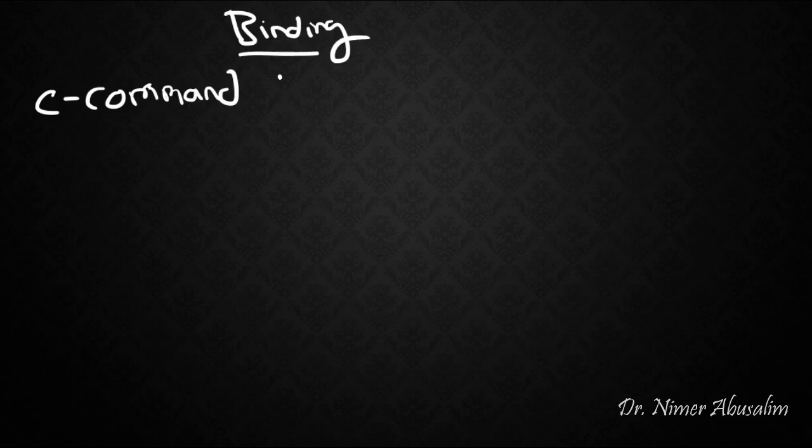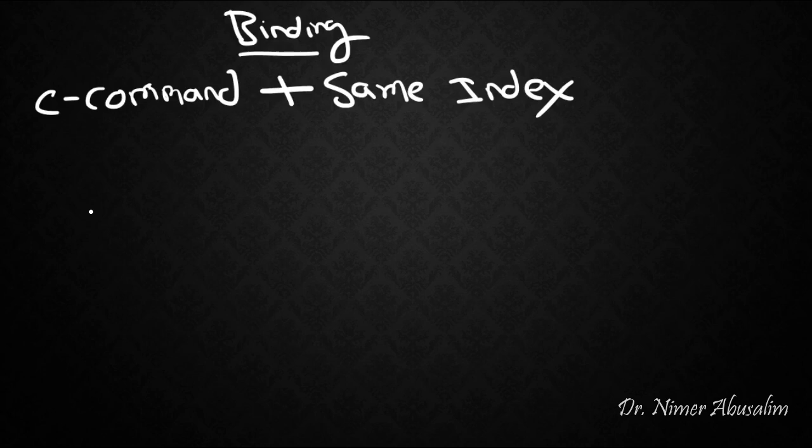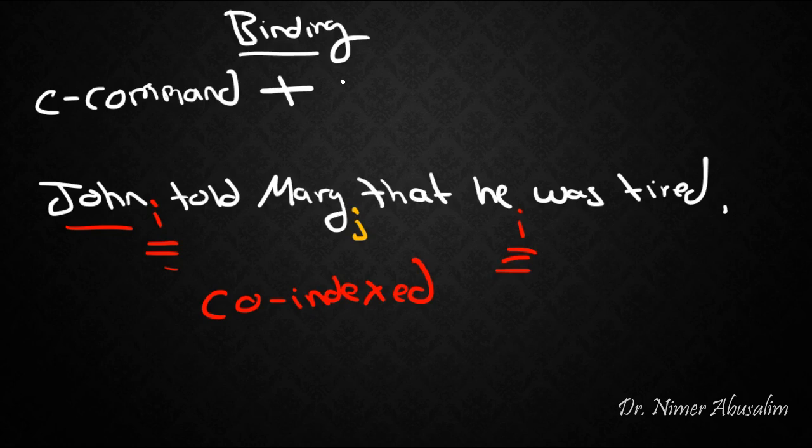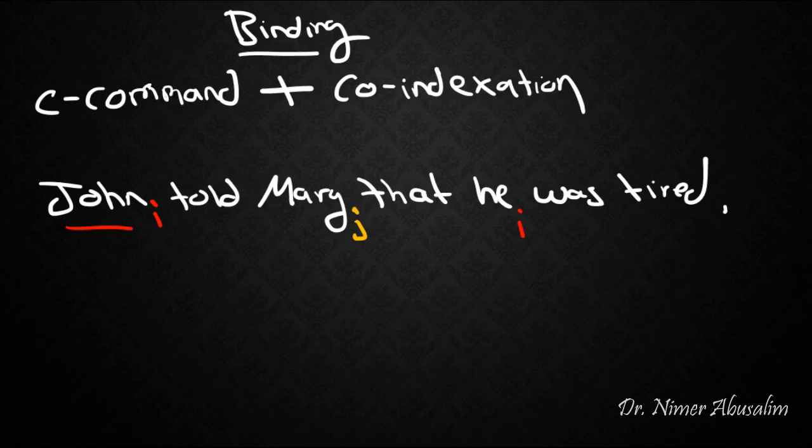Binding now basically is c-command plus same index. Same index is kind of like this: John told Mary that he was tired. If John is I and Mary is J, we want he to be I. Does John bind he? First of all, like we said, we need the same index. So yes, here's I and here's I. Now when two NPs have the same index, we say that they are co-indexed. Co-indexed means that they have the same index, I and I. So then really binding is c-command plus co-indexation.